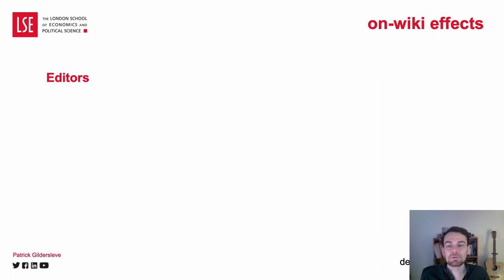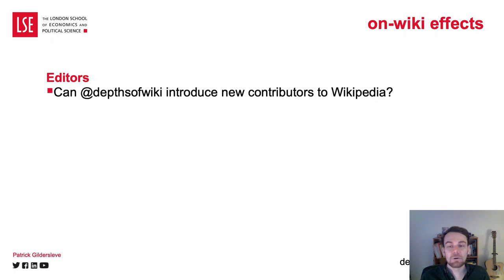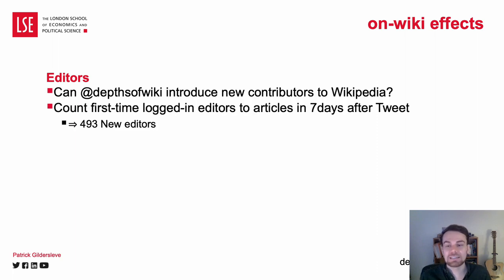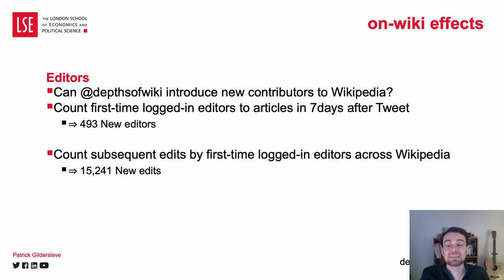Finally, looking at simple counts for editors, I find that in 493 cases, a new editor's first edit is to an article that has just been posted by Depths of Wikipedia. These 493 editors go on to make 15,000 edits across the rest of Wikipedia, not just Depths of Wikipedia pages.